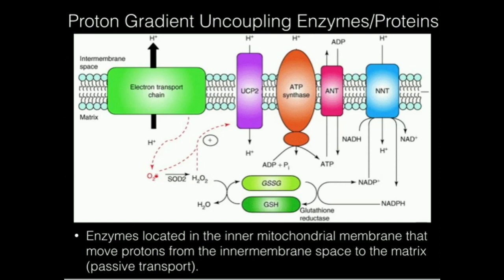They couple it to a completely different reaction, or really no reaction at all, as in the case of uncoupling protein. So the key here is that an uncoupling protein or enzyme facilitates the movement of protons from the inner membrane space to the matrix, but does not couple it with ATP synthesis — with respect to the electron transport chain.